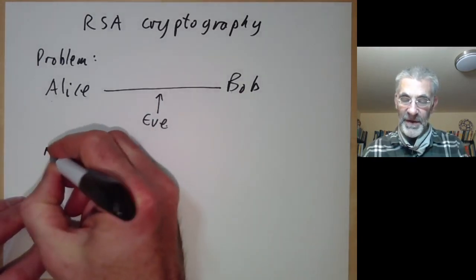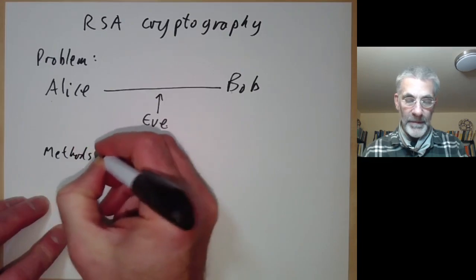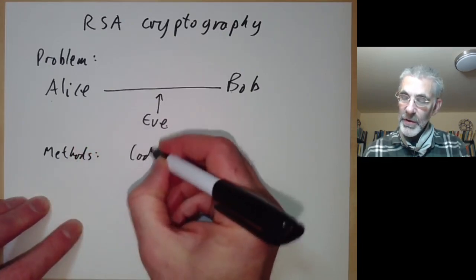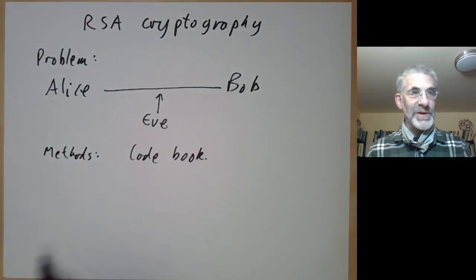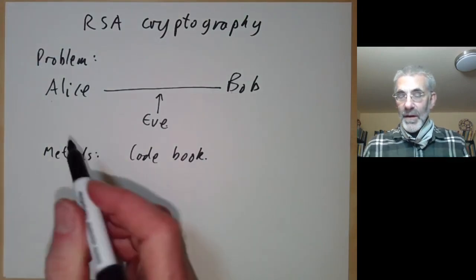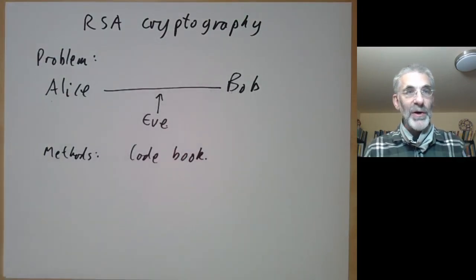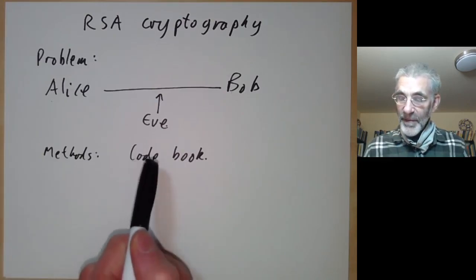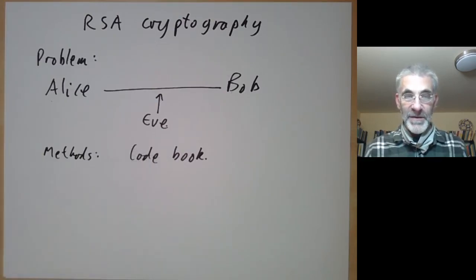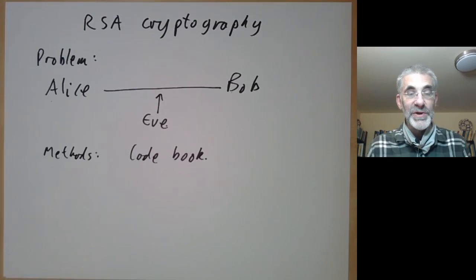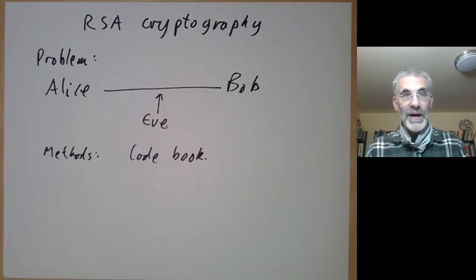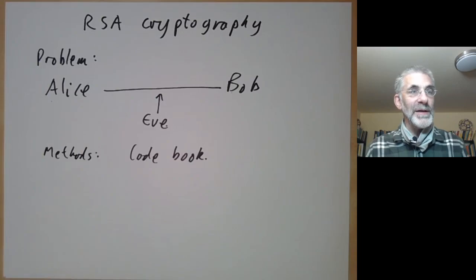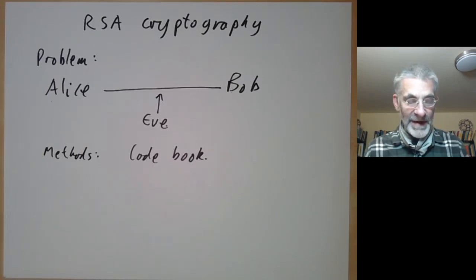There are several methods of doing this. Alice and Bob could use a code book where sequences of letters have assigned meanings. This was a method used by navies in the 20th century—the British and German navies had ships and submarines carry these huge code books telling them what various sequences of letters really meant.